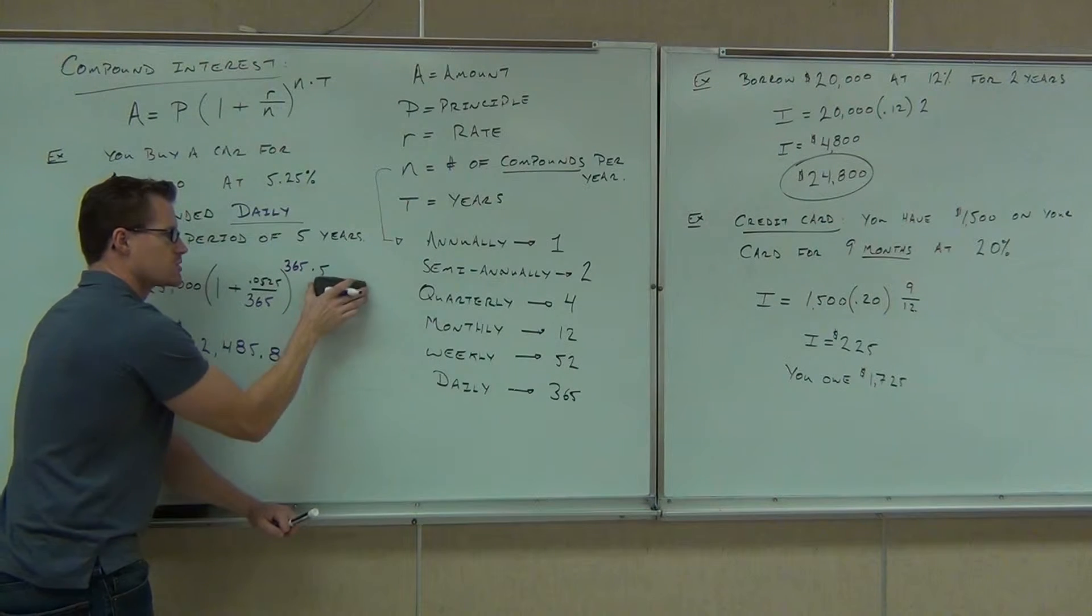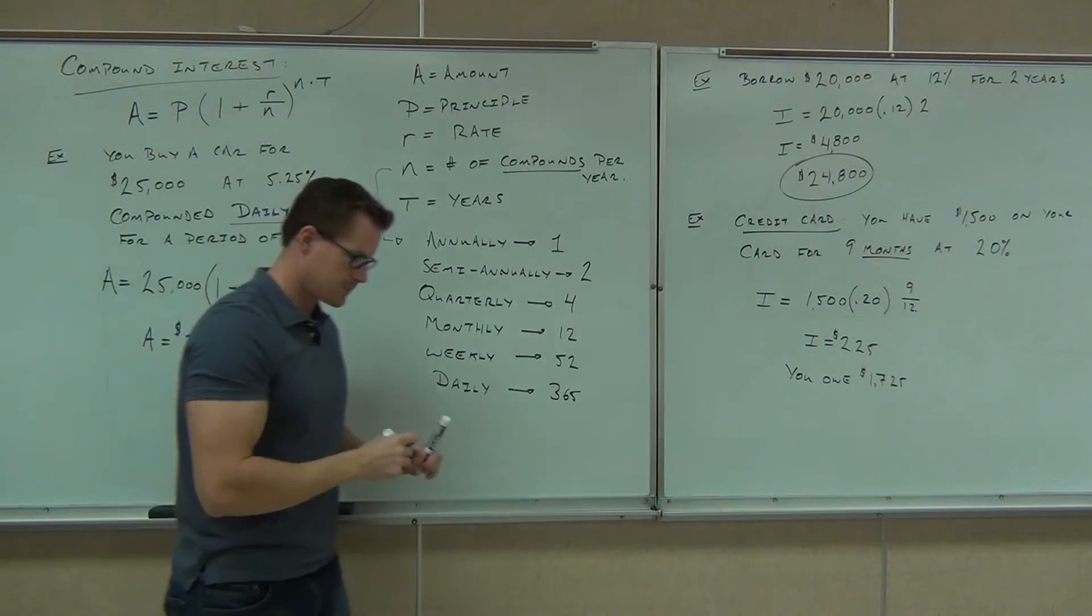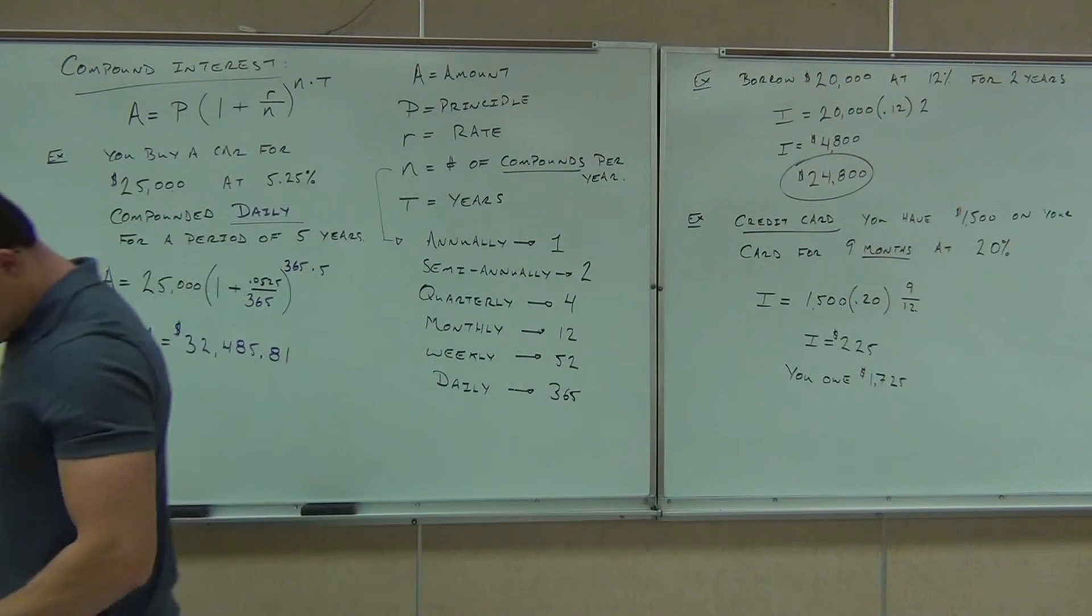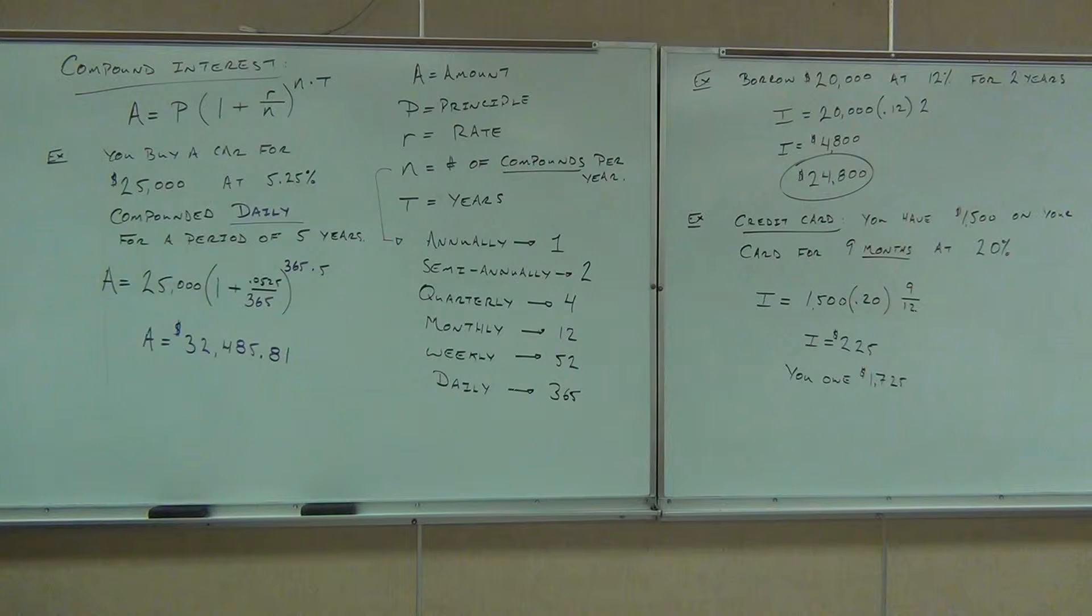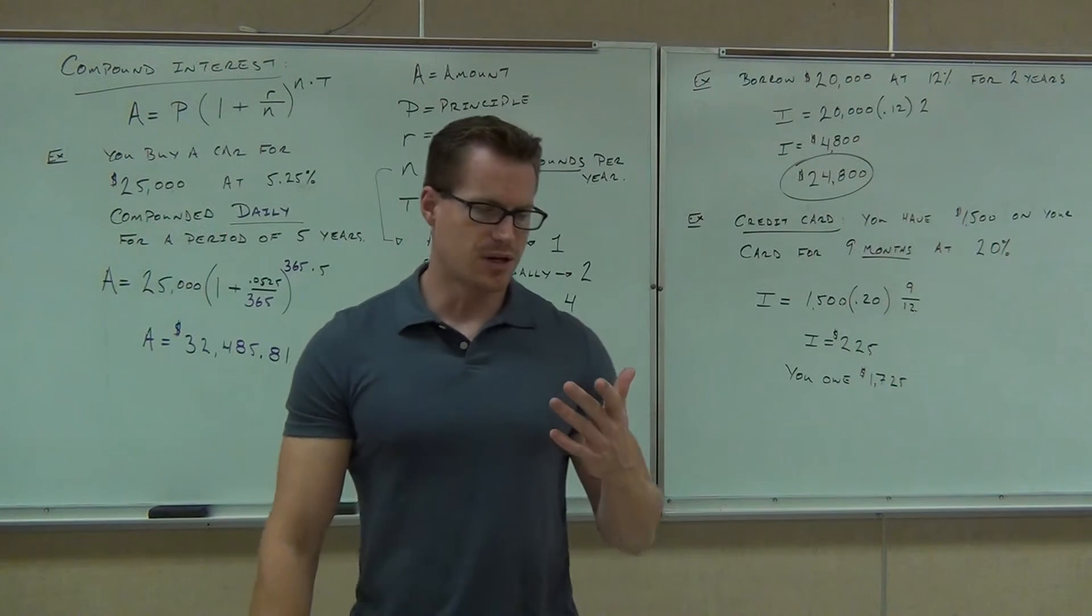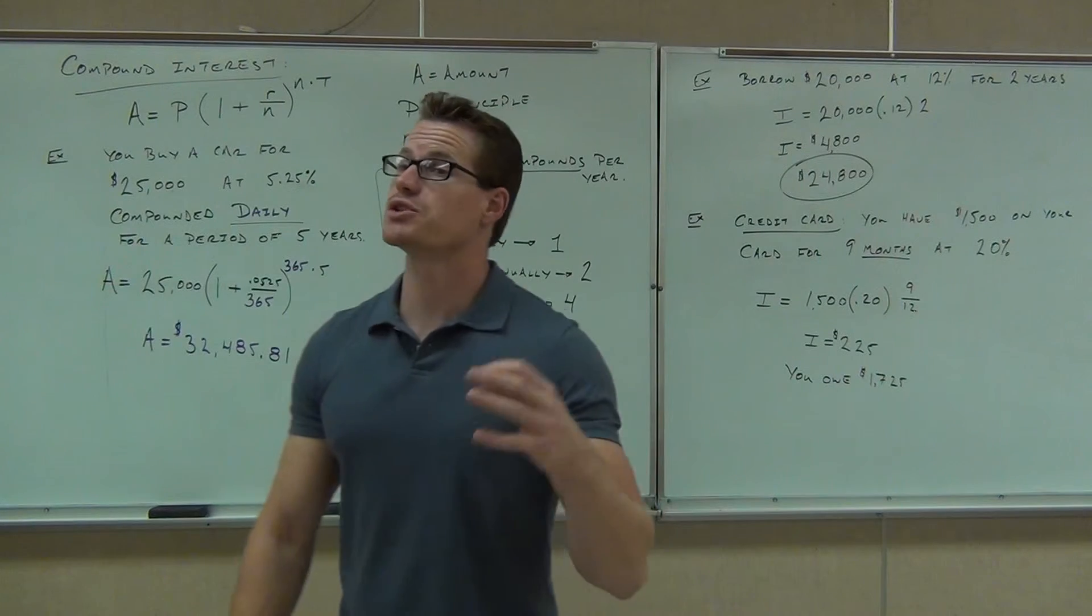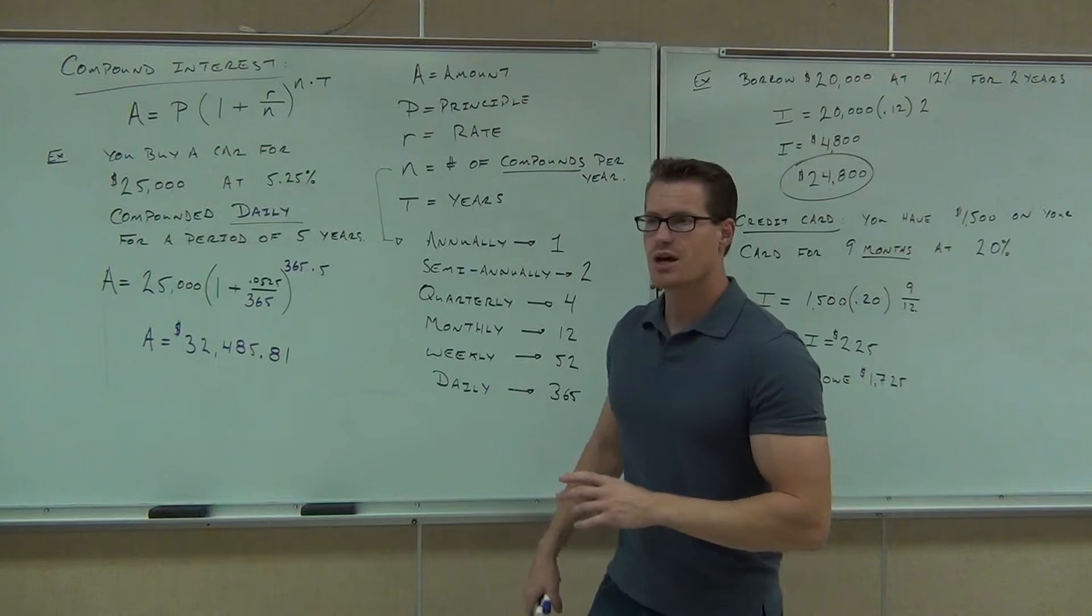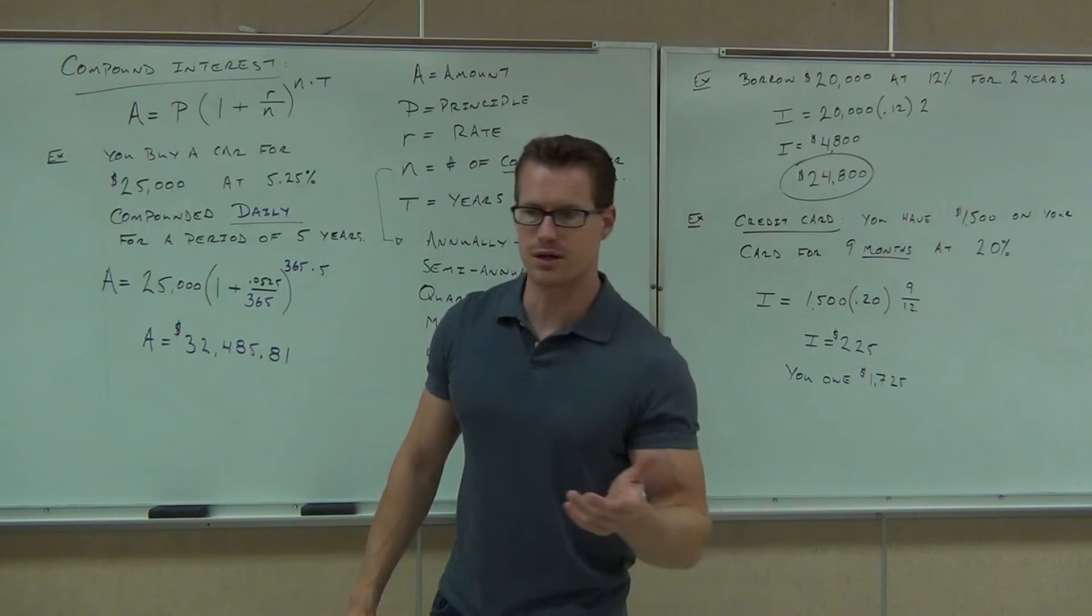Now, what I'd like you to do is go through on your own and calculate that. So the whole idea here is being able to identify the principal, the interest rate, the number of years, and especially, most importantly, the number of compounds. If you follow this little chart, that'll tell you the number of compounds, you can use that for any problem that you're working on.